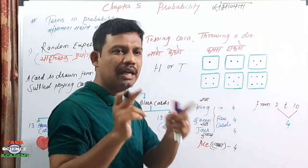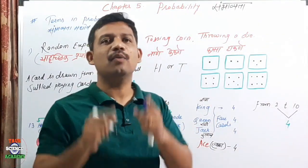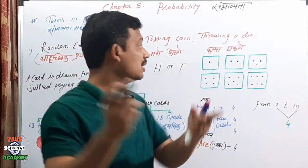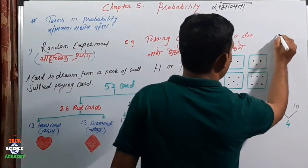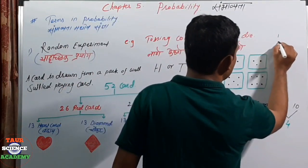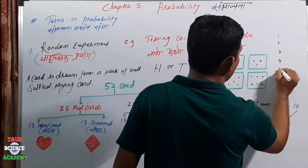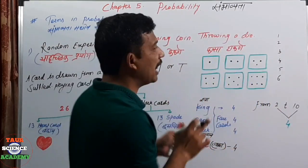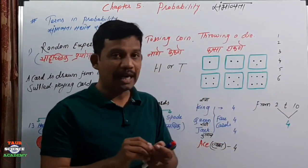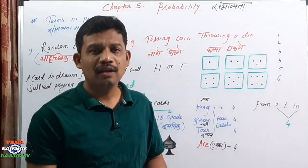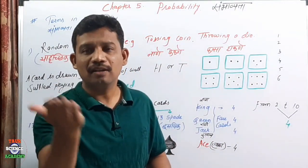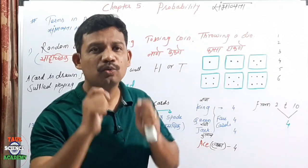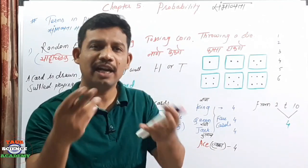So in this way, there are six possibilities. These six possibilities are 1, 2, 3, 4, 5, or 6. This is what a random experiment is. Tossing a coin is a random experiment. Throwing a die is a random experiment.